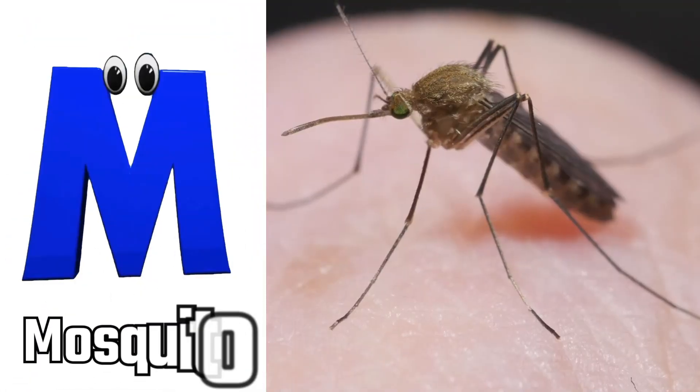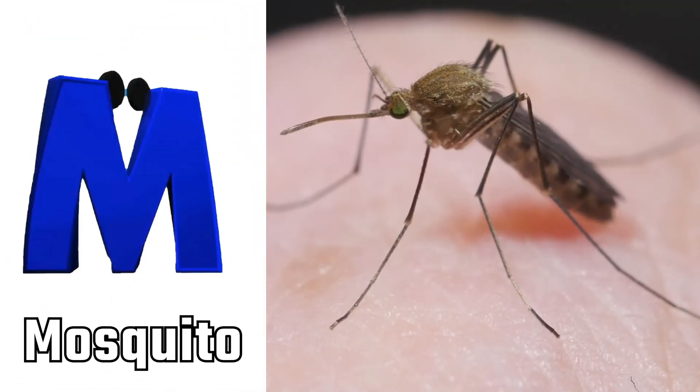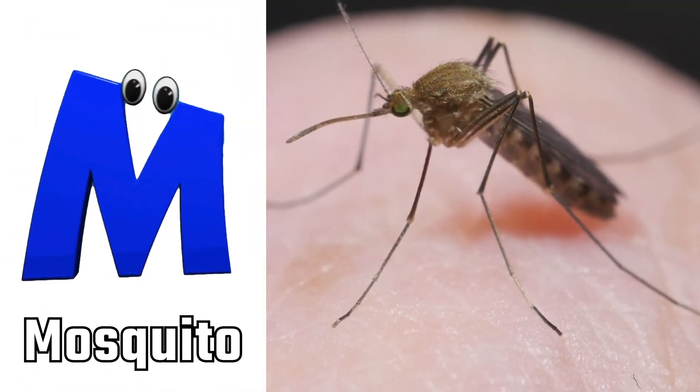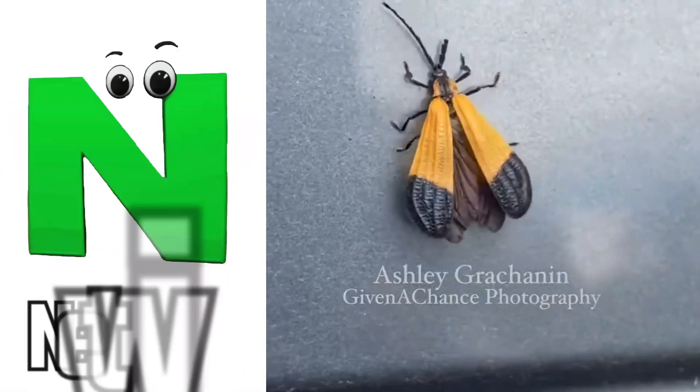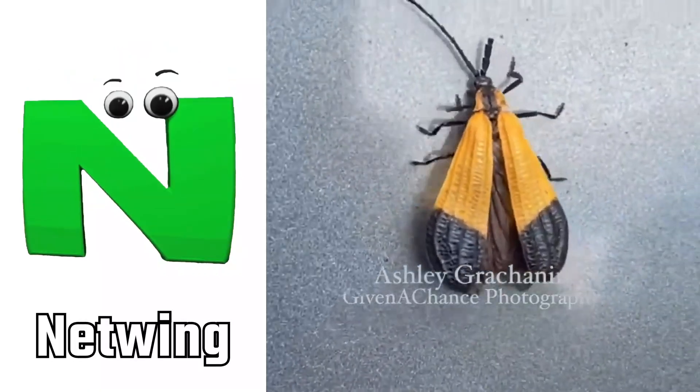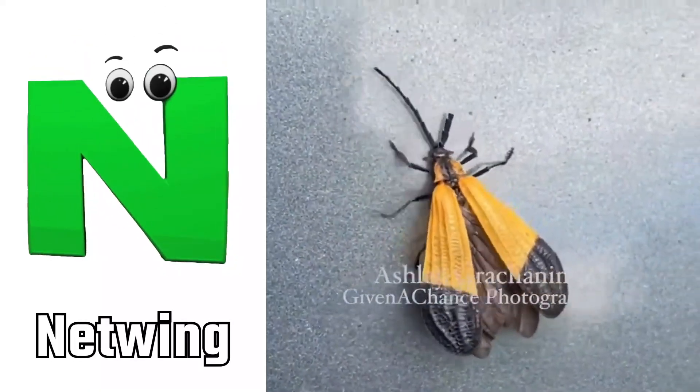M is for Mosquito. M, M, mosquito. N is for Netwing. N, N, netwing.